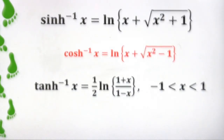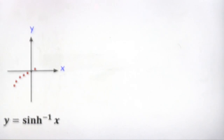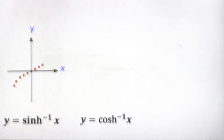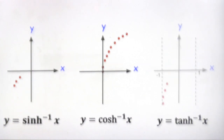These are examples of the inverse hyperbolic functions, and here is what their graphs look like. For inverse hyperbolic sine, the graph looks like this. For inverse hyperbolic cosine, the graph looks like this. And finally, for inverse hyperbolic tangent, the graph looks like this. Thank you for watching this video — I hope you enjoyed it.